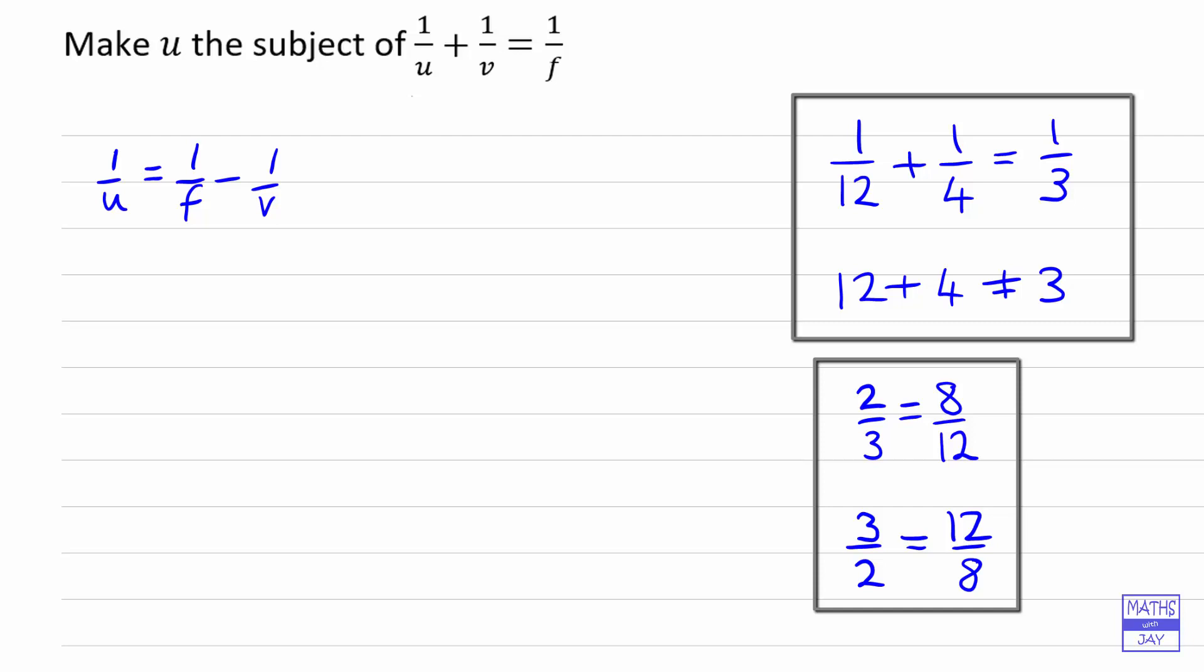What we're really doing is finding the reciprocal of both sides. In other words, one divided by two thirds is three halves, and one divided by eight twelfths is twelve eighths. So that's what we're going to be doing in this example.